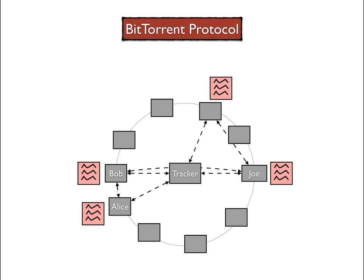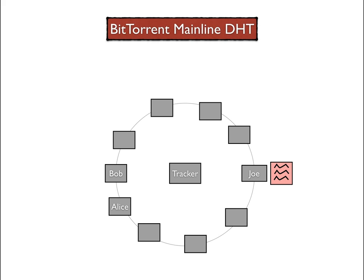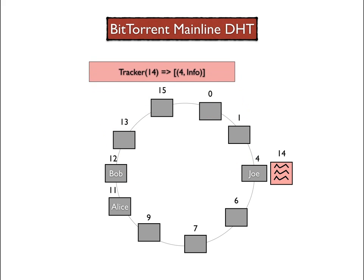The BitTorrent mainline distributed hash table solves the issue by decentralizing its behavior. We have now covered enough material in this series to know how to design a decentralized tracker, so let's pause for a few seconds to think about how it can be achieved. The first step is to assign an identifier to the file, which can be obtained by hashing its content. We then assign IDs to nodes from an ID space with the same range as the ID space for files, and ensure they are unique for every node. In practice, we can simply pick IDs randomly from a sufficiently large space. We also store the tracking information on the node that is closest to the file ID in terms of XOR distance.